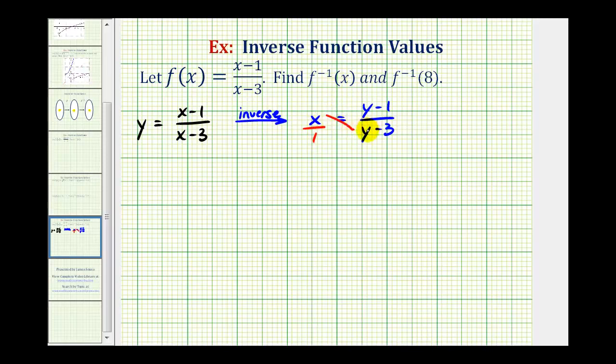x times (y - 3) must equal 1 times (y - 1), or we could just multiply both sides by (y - 3). Either way, we have x(y - 3) = y - 1. Distributing, we get xy - 3x = y - 1.